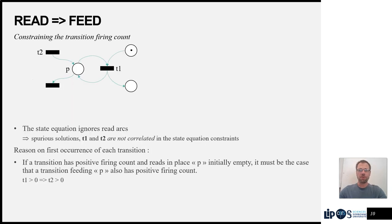The second type of constraint is a new kind of read-implies-feed constraint. The idea here is that the state equation does not actually see self-loops. So here to fire T1, we need P to be marked, but the state equation won't be aware of this. We can reason on the first occurrence of each transition. If T1 is positive, then it must be the case that T2 is positive as well. Somebody must have fed P.